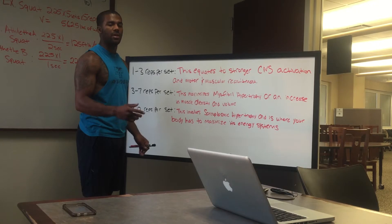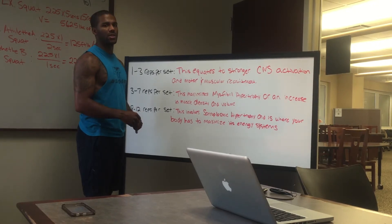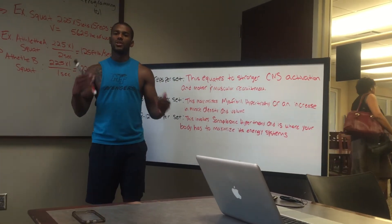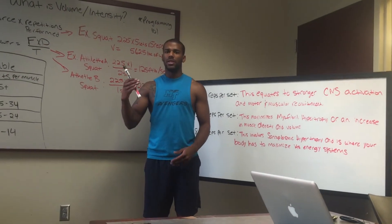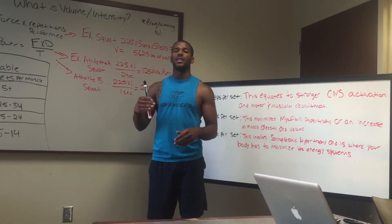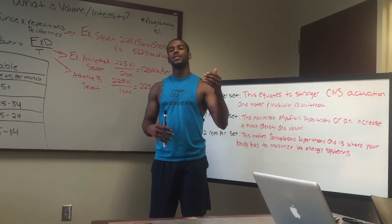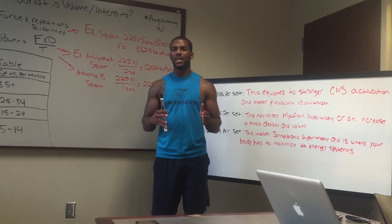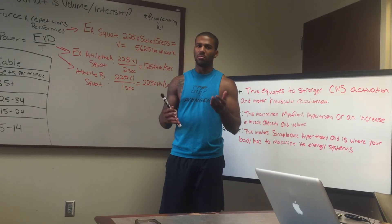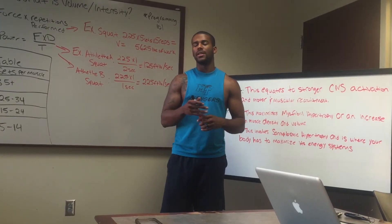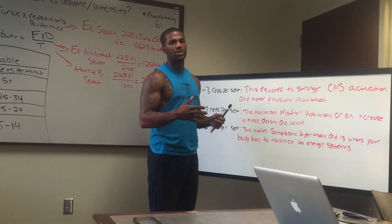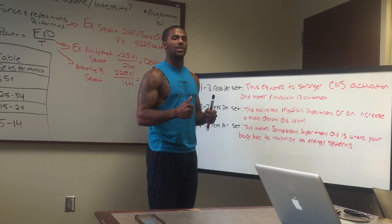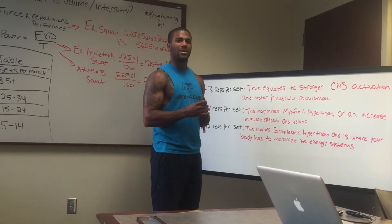Anything over twelve reps moves beyond hypertrophy and into muscular endurance — it's not really helping hypertrophy but it does help muscular endurance. So just remember: high volume equals lower intensity, and higher intensity equals lower volume. You really can't have both at the same time. Play around with them, refer to Prilepin's chart based on that, and you'll be good.